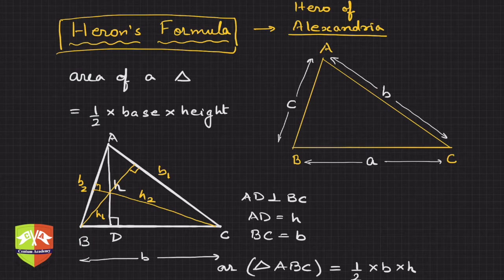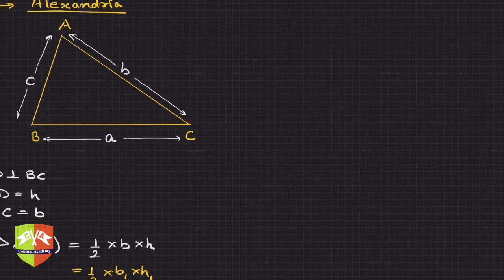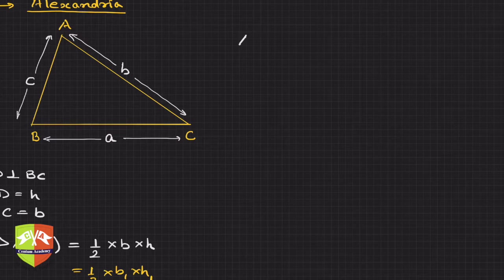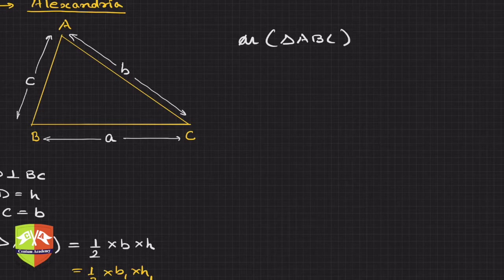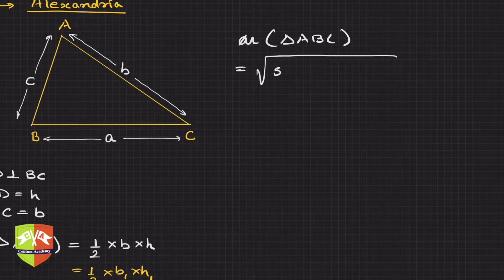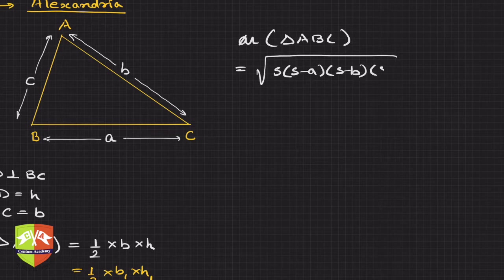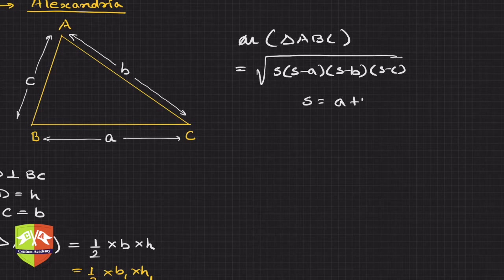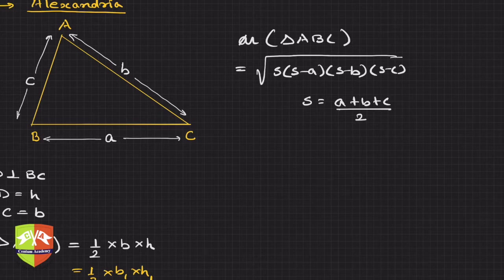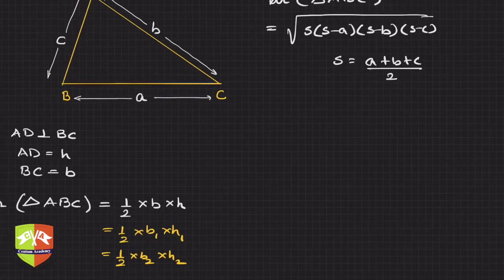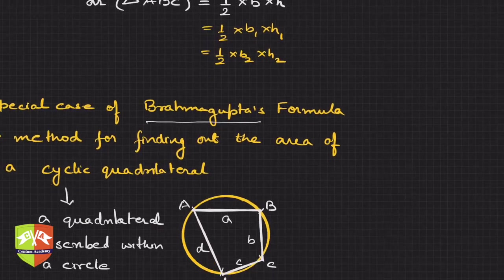So what is this Heron's formula? If this is the triangle, then Heron's formula says: area of triangle ABC whose sides a, b, and c are given is equal to square root of s(s-a)(s-b)(s-c), where s is semi-perimeter, which is (a+b+c)/2. This is Heron's formula for a triangle.